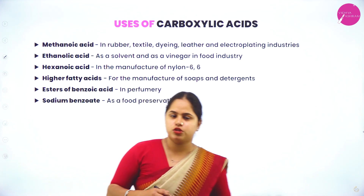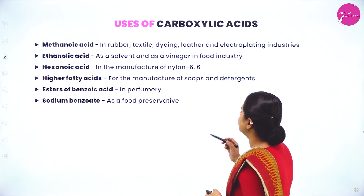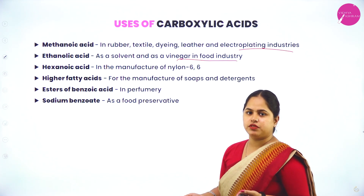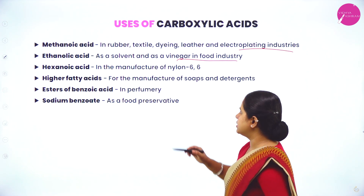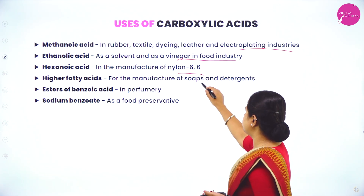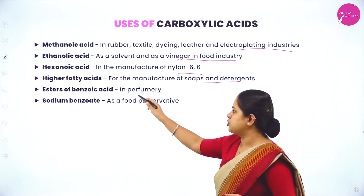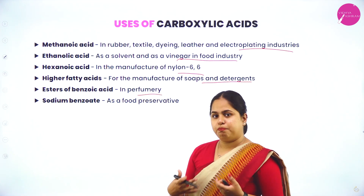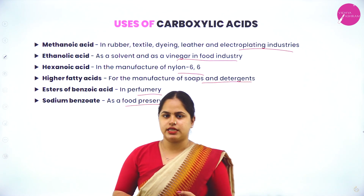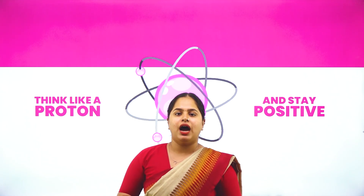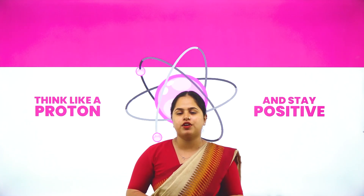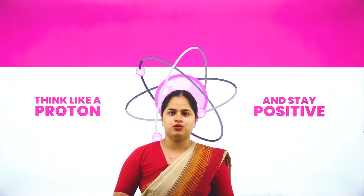Uses of carboxylic acids: methanoic acid is used in rubber, textile, dyeing, leather and electroplating industries. Ethanoic acid (acetic acid) is used as a solvent and in vinegar in the food industry. Hexanoic acid is used in the manufacture of nylon 6,6. Higher fatty acids are used for the manufacture of soaps and detergents. Esters of benzoic acid are used in perfumery, and sodium benzoate is used as a food preservative. With this we come to the end of the chapter on aldehydes, ketones and carboxylic acid.